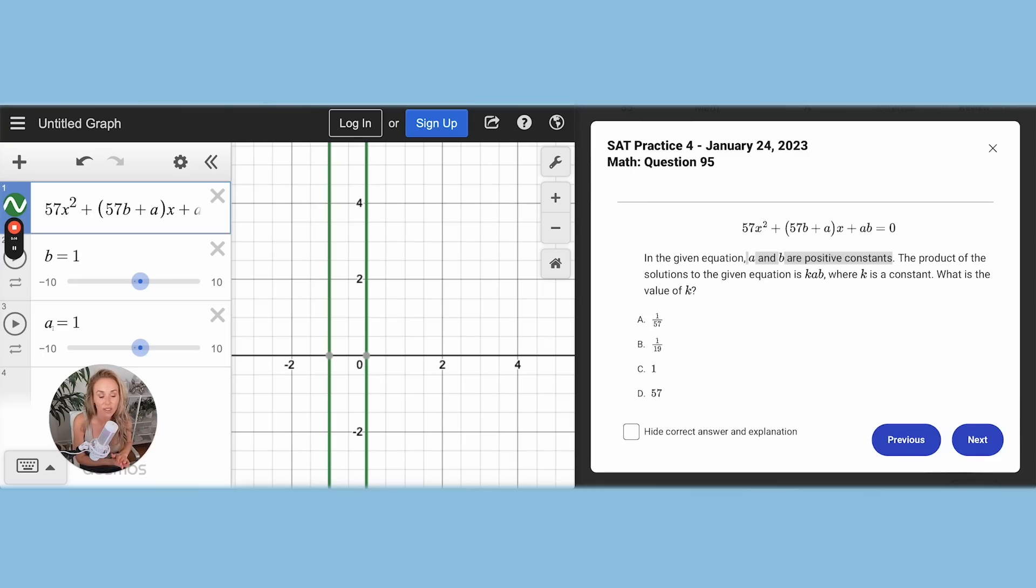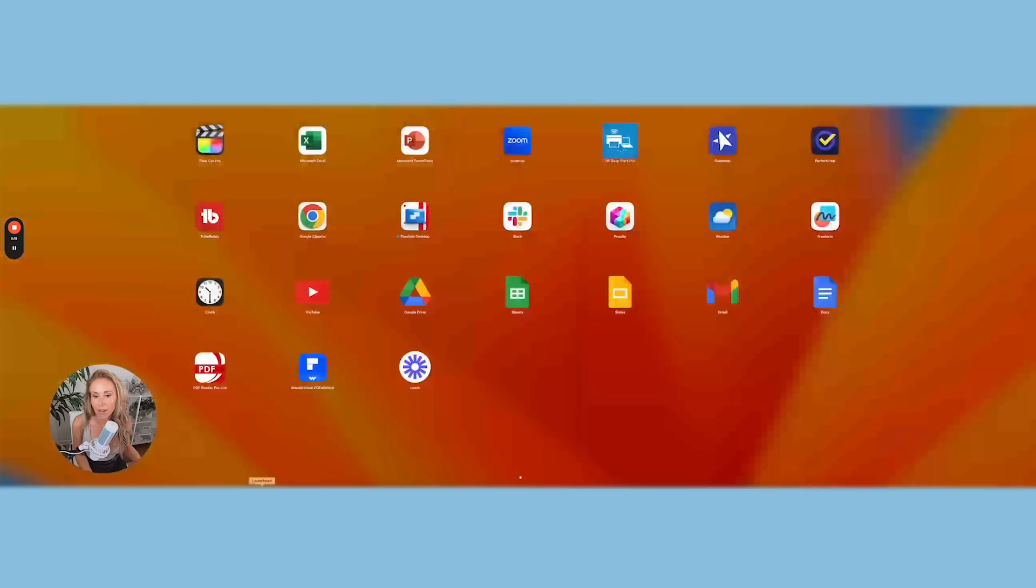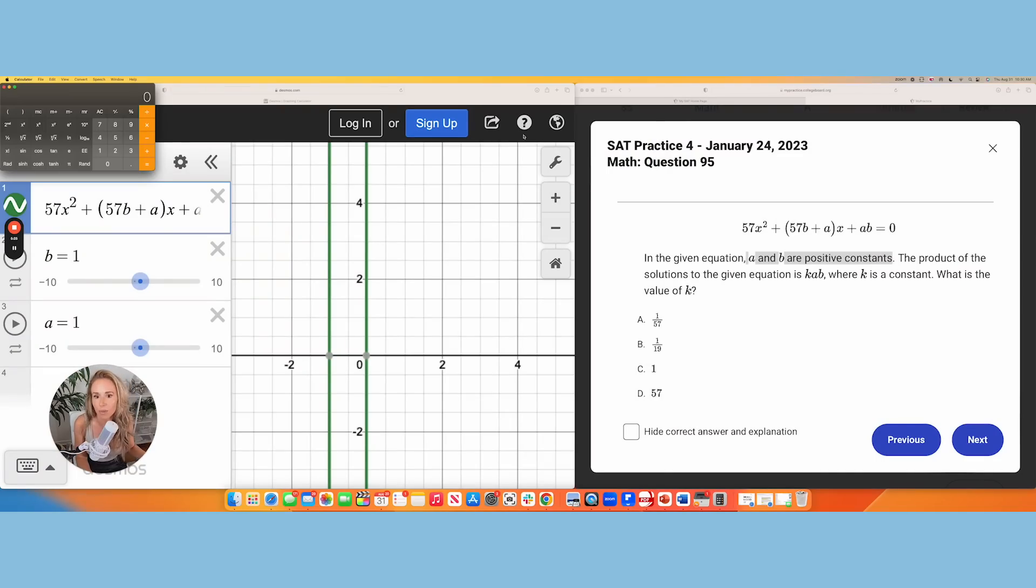So when you look at all the answer choices, they don't have it in decimal form. What you'll have to do is just in your calculator divide. So I could even pull up a calculator right now. Or I could use Desmos too, but I'm in the graphing, so I just don't want to have to deal with that right now. So we've got one divided by 57.